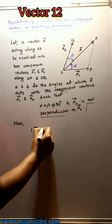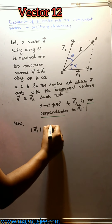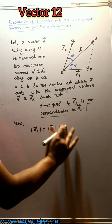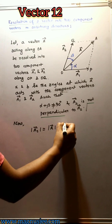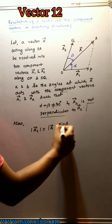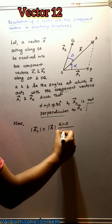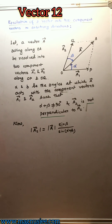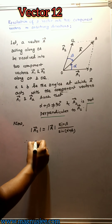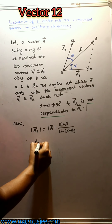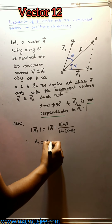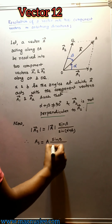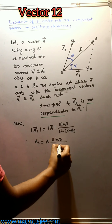The magnitude of vector a1 is equal to a times sin(beta) divided by sin(alpha plus beta). Therefore, a1 equals a·sin(beta) / sin(alpha + beta).